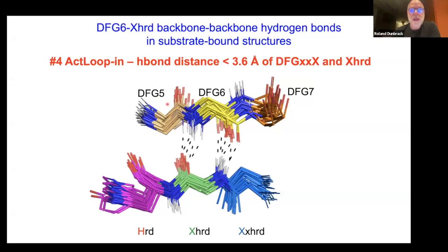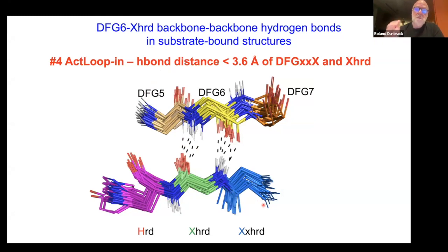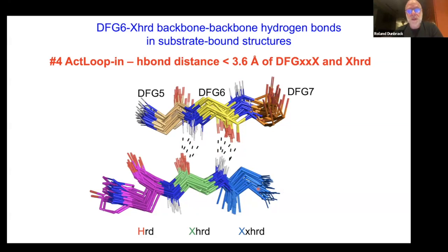For the N-terminal part of the activation loop: at DFG+5 and DFG+6, there is a well-known hydrogen bond — a small beta sheet interaction with the XHRD motif of the catalytic loop. The aspartate of the HRD motif makes a hydrogen bond with the substrate hydroxyl (serine, threonine, or tyrosine). In all substrate-bound structures, there are hydrogen bonds between DFG+6 and the residue just before the HRD. Distances are around 3 Å, so we set a cutoff of 3.6 Å.